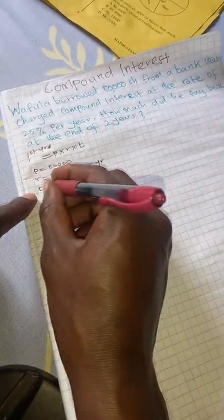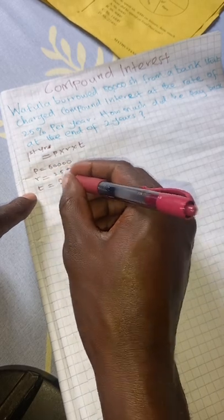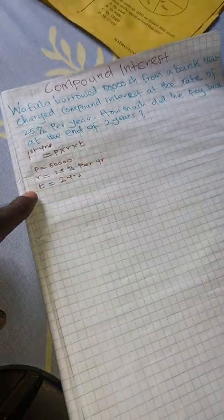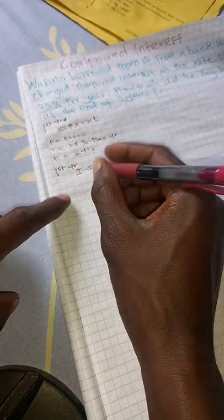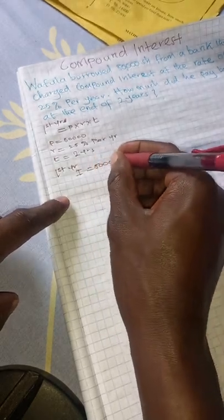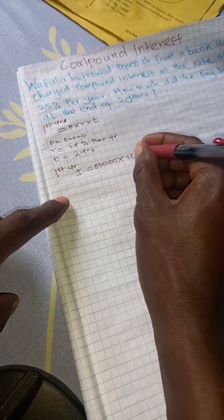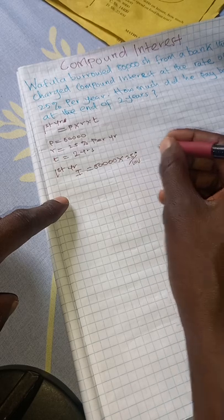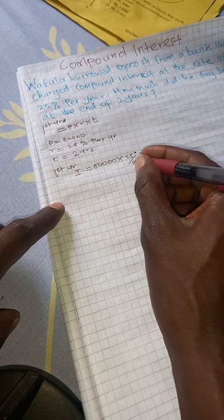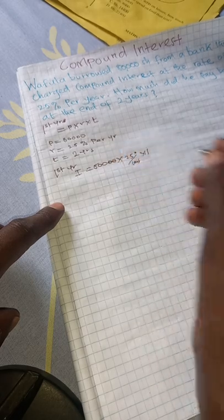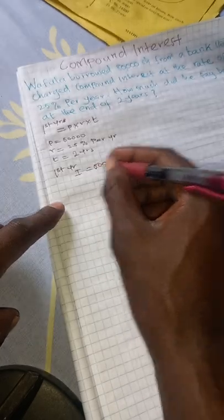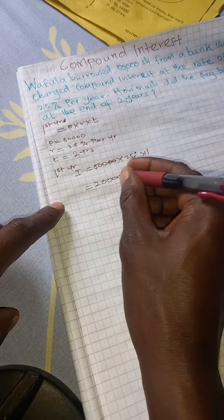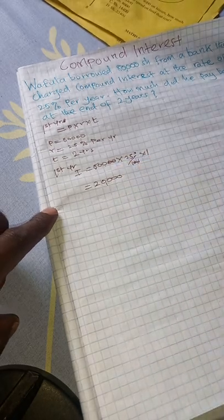And time refers to the period, which is two years. In the first year, the interest earned: we are going to say 8,000 — which is the principal — times the rate, which is 25 over 100, times time, which is 1 year. We cancel two zeros with two zeros, leaving 800 times 25, and you get 20,000. That is the interest earned in the first year.